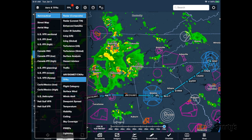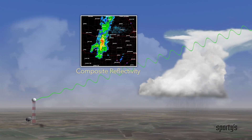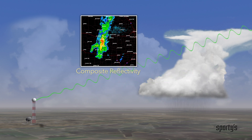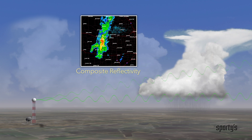Notice that ForeFlight offers two choices for radar: composite and lowest tilt. Composite radar combines all the different elevation scans from a ground-based radar and shows the maximum reflectivity for each location. It's sort of a worst-case picture of weather, displaying red even if the red part of the storm is at 40,000 feet. This is typically the preferred choice for pilots, since it is the most conservative.